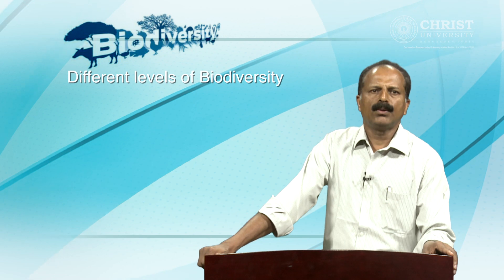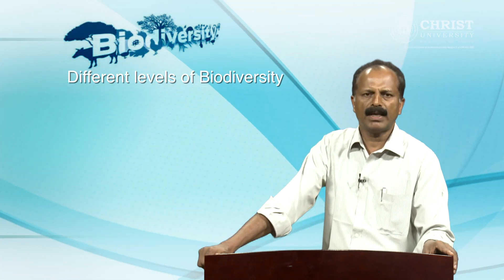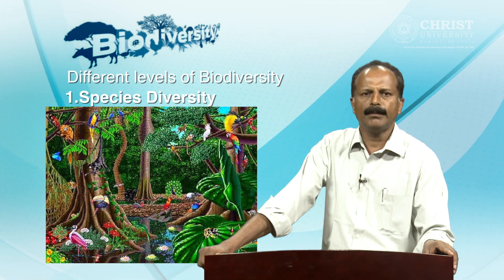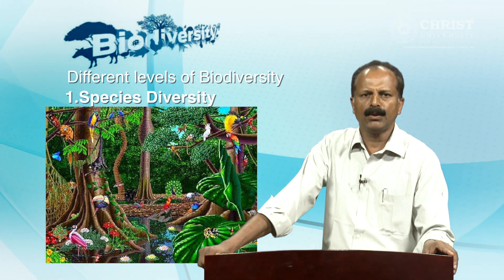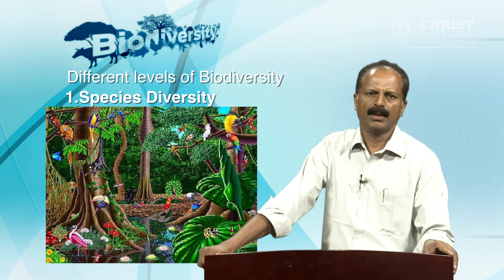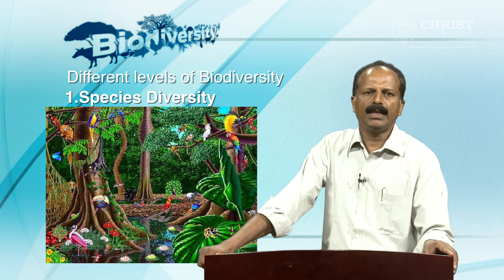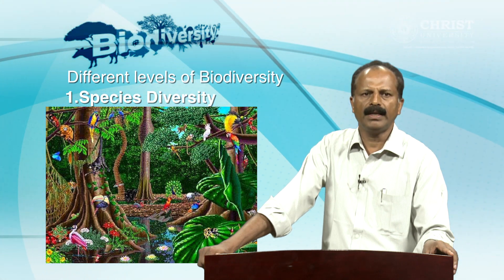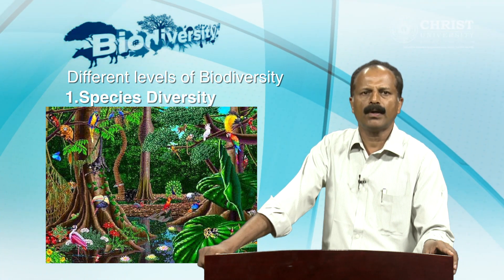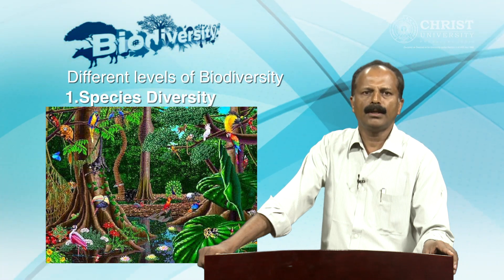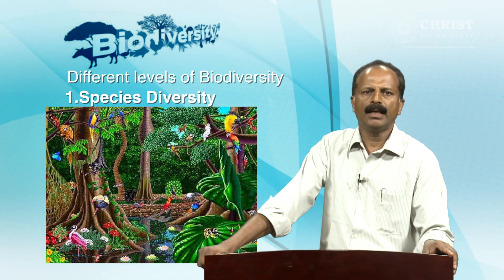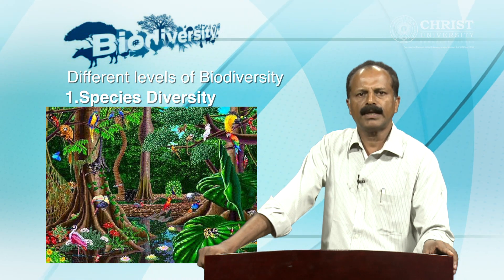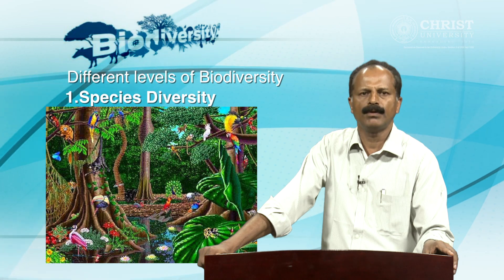Now let us look at the different levels of biodiversity. Number one: species diversity. It is the number of plant and animal species present in a community or an ecosystem. It varies a great deal between ecosystems. For example, species diversity is very high in tropical rainforests and coral reefs, and low in isolated islands. In an ecosystem with high diversity, a large number of different species of plants and animals will be present.